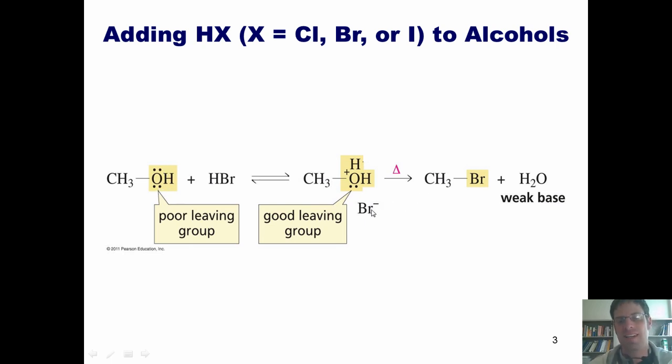What happens next is because this H2O leaving group is such a good leaving group, bromide, Br-, and this could also be chloride or iodide, can come in here SN2 style, form a bond with this CH3 and kick off the water as a leaving group to give me this product, methyl bromide, or generically speaking, an alkyl halide, either an alkyl chloride, alkyl bromide, or alkyl iodide.